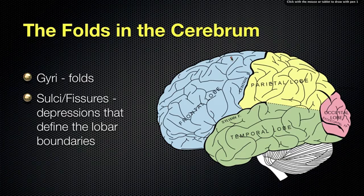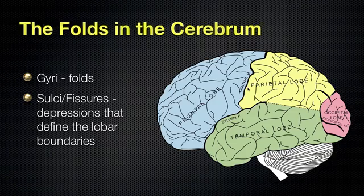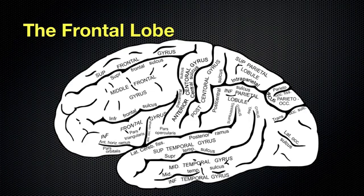Then we have the sulci or the fissures, and sometimes we use these interchangeably. These are the depressions in the brain that define the lobar boundaries. You can see we have all of these grooves going throughout the different lobes of the brain, and those are called sulci — in some cases, we call them fissures. With that understanding, let's look at the frontal lobe.